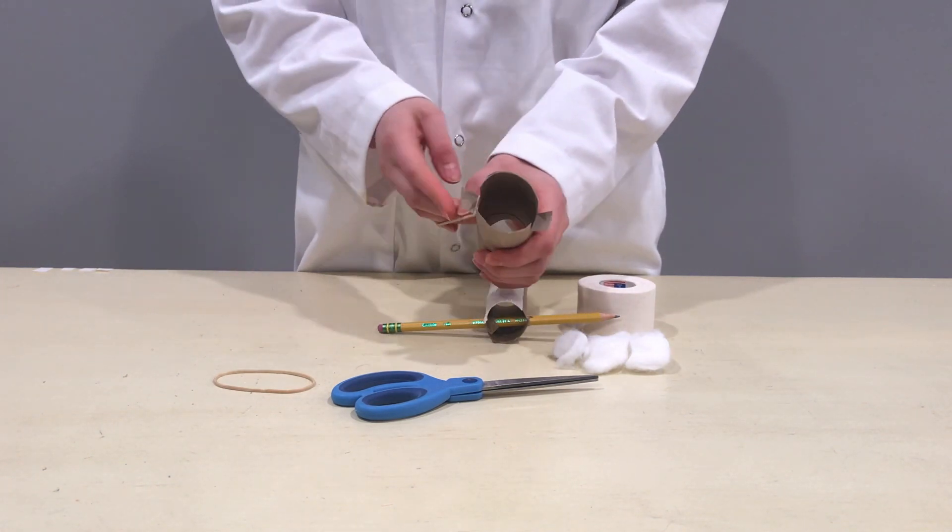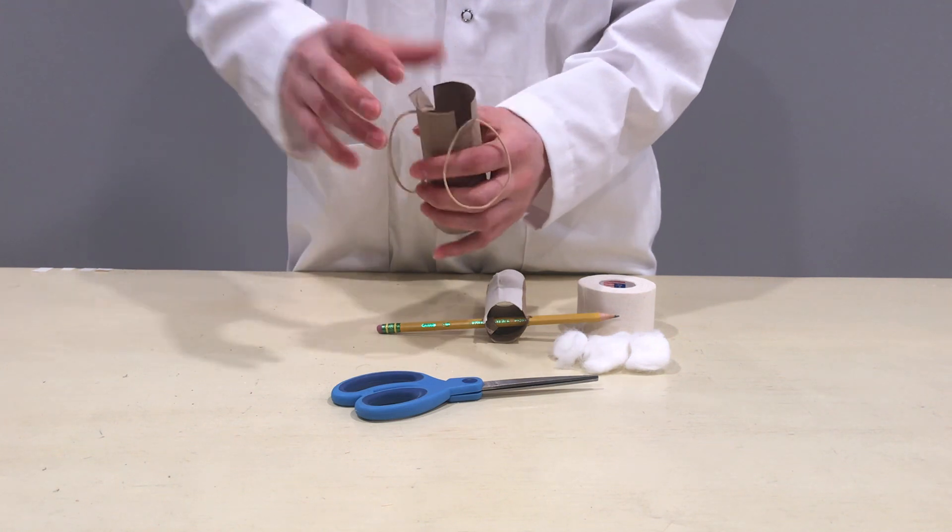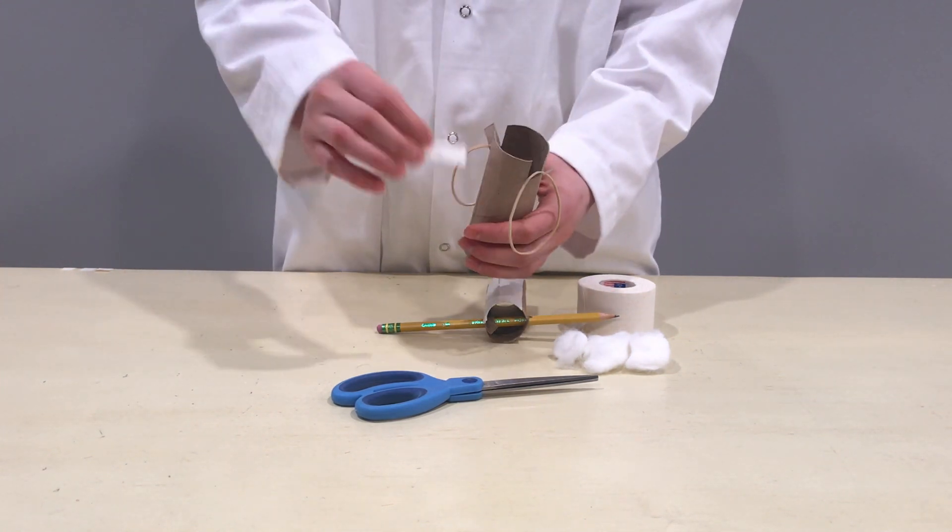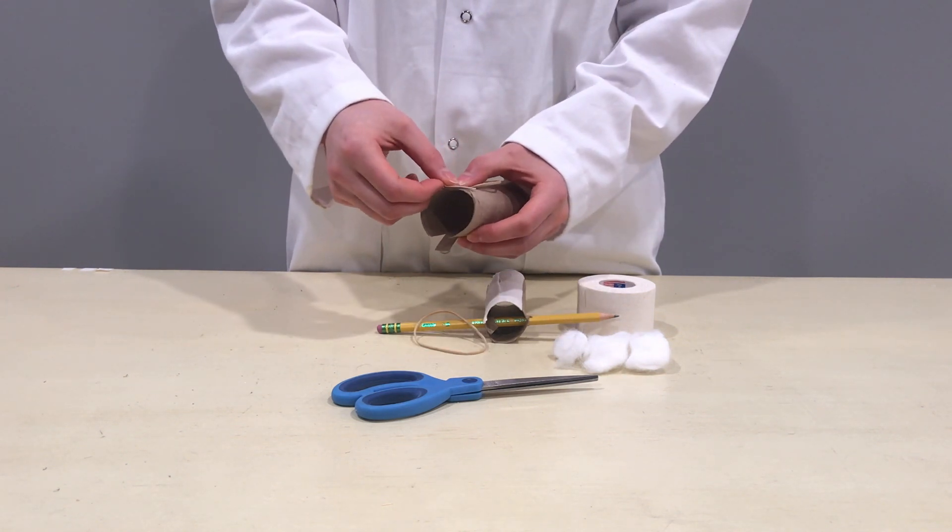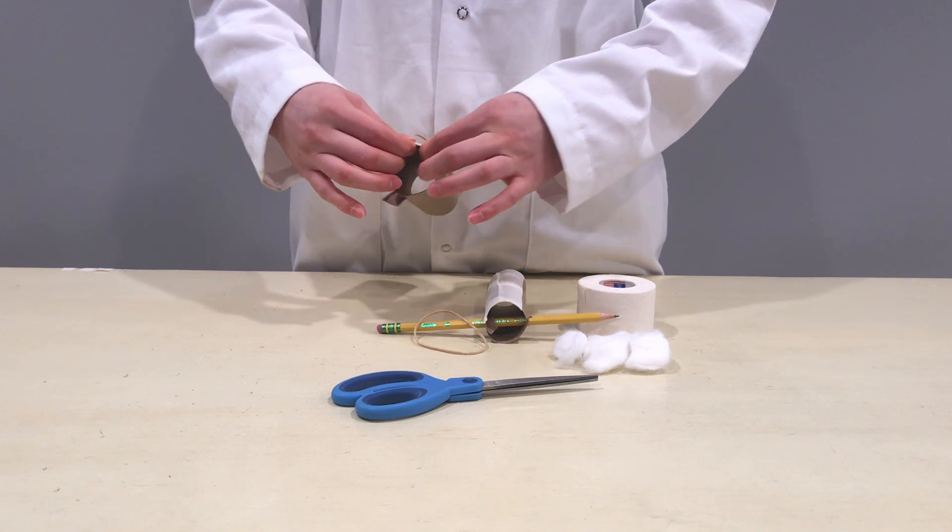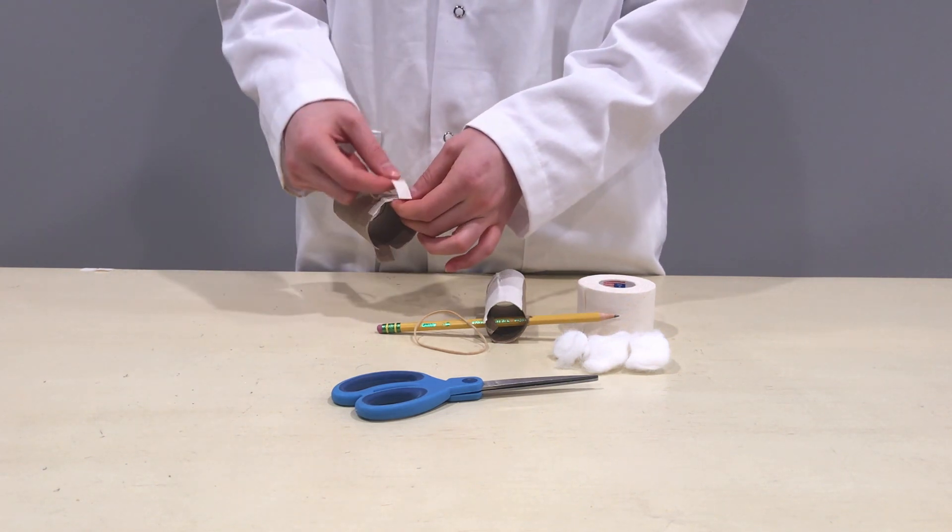Carefully loop one rubber band through the slits on one side so that it hangs from the cardboard piece in the middle. Put a piece of tape over the slits to reinforce the cardboard tab. Loop the other rubber band through the slits on the other side of the tube. When you're finished, the tube should have a rubber band hanging from each side.